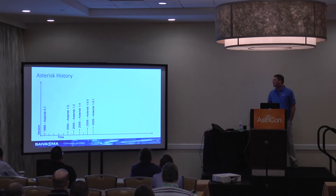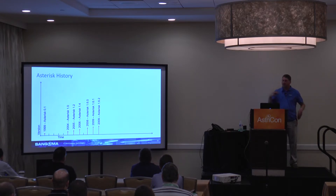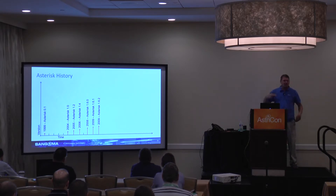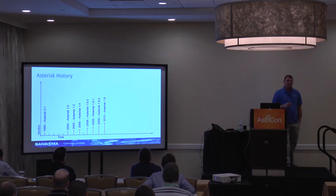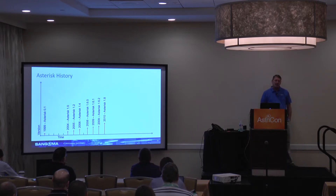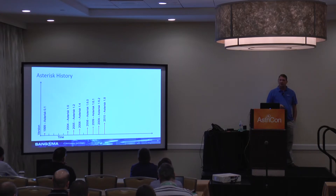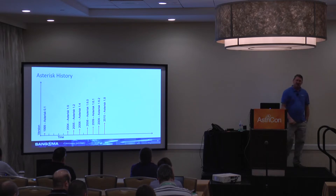1.6.0, 1.6.1, and 1.6.2 were actual individual releases - they weren't just bug fixes. They kind of changed their numbering scheme at this time. In 2010, Asterisk 1.8 was released - that was the first LTS release, which is a long-term support release, and very popular. Any 1.8 users out there? You need to upgrade - it is no longer supported.